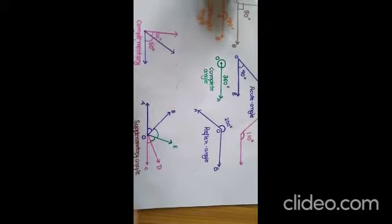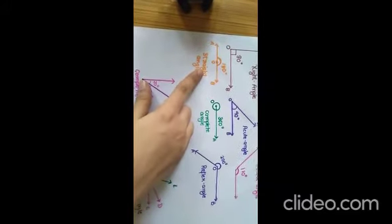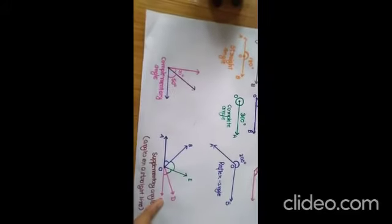Supplementary angles. When two or more angles form together and form 180 degrees, they are known as supplementary angles.